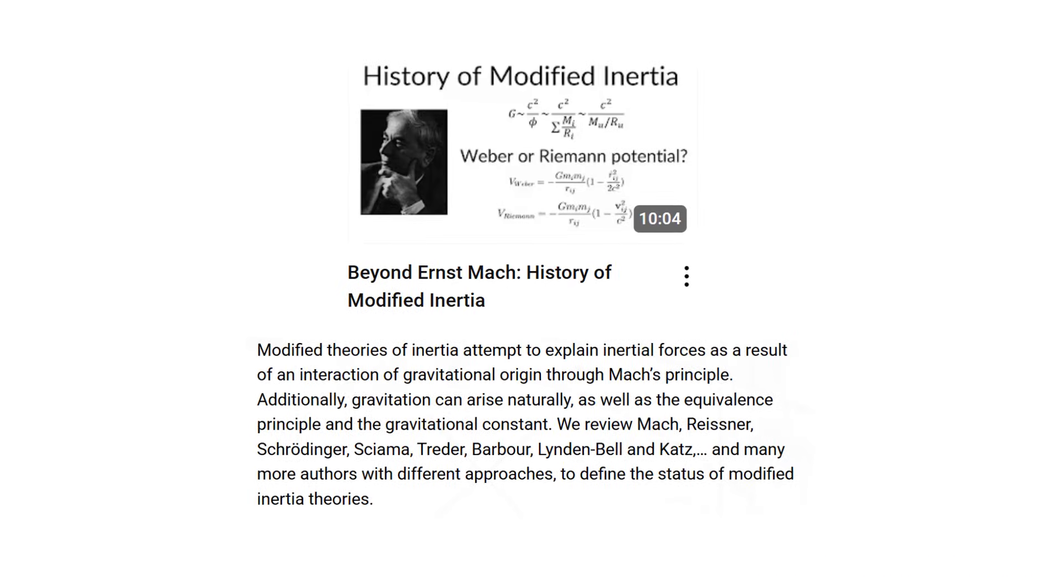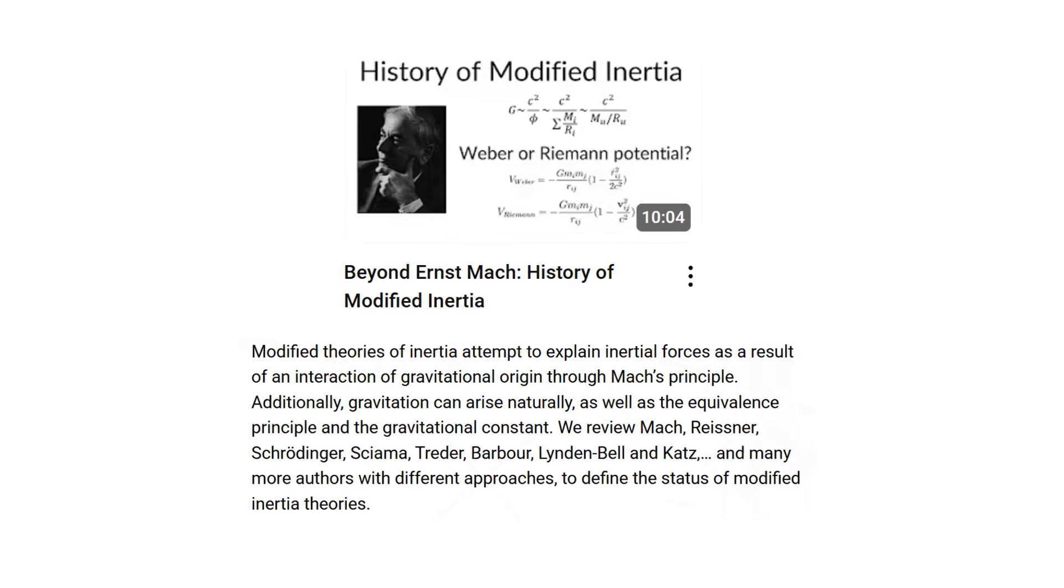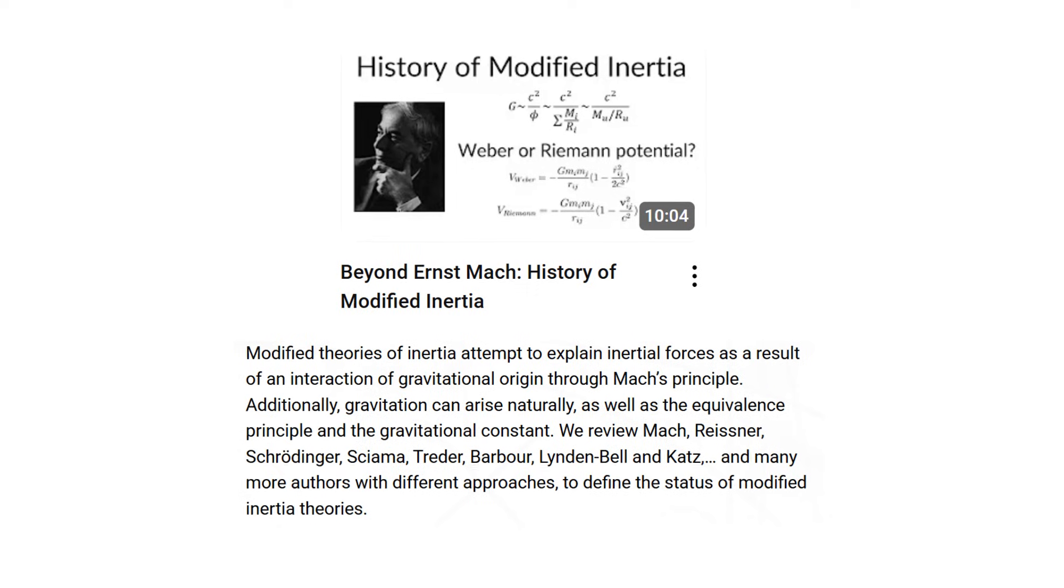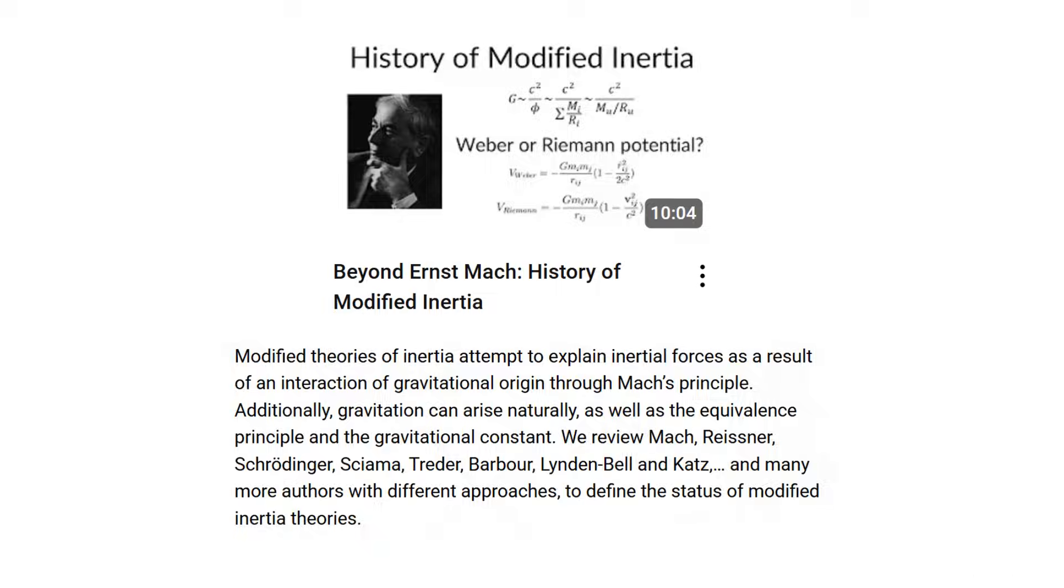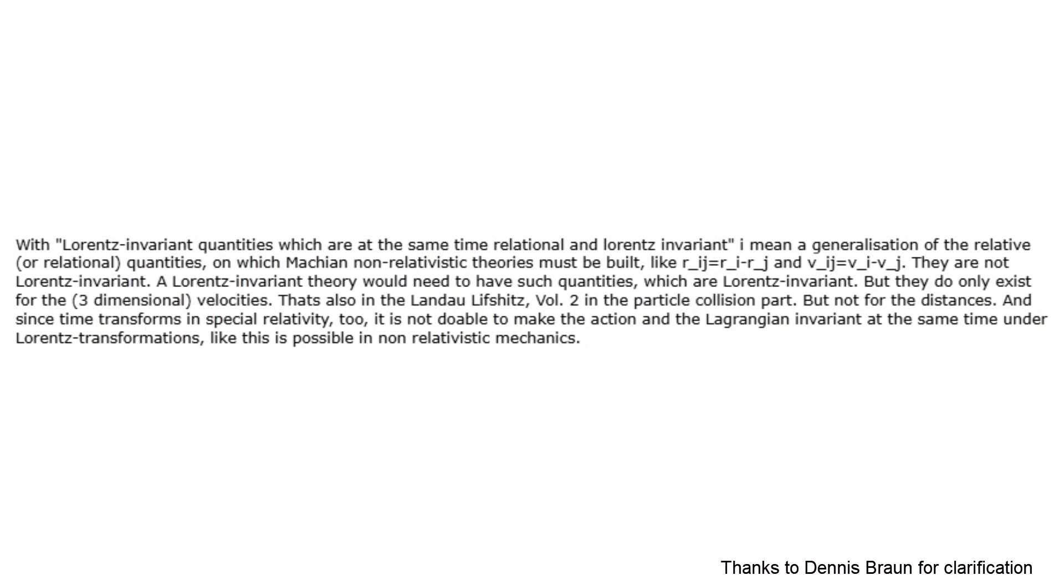As discussed in our previous video of Machian theories that aim to unify inertia and gravity, these models are inherently linear and non-relativistic. To make them relativistic, one would have to reformulate them using Lorentz invariant quantities that are also relational. However, such quantities exist only for velocities, not for positions.